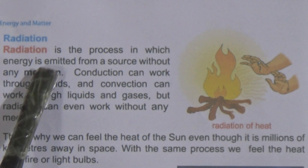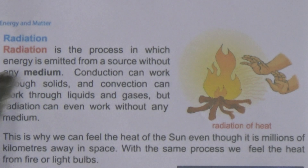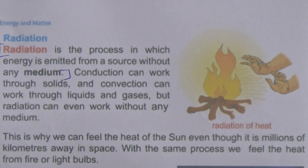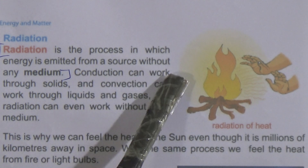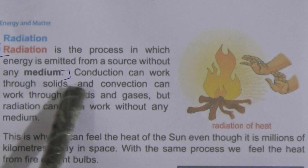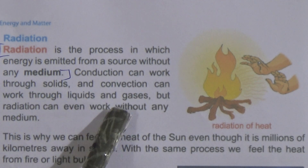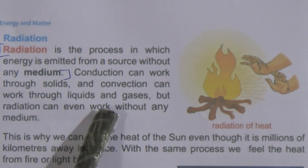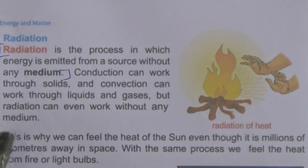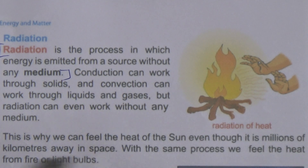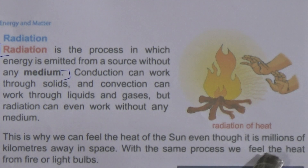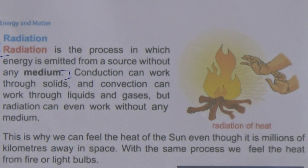Now come to radiation. Radiation is the process in which energy is emitted from a source without any medium. Conduction works through solids, and convection works through liquids and gases, but radiation can work without any medium. This is why we can feel the heat of the sun even though it is millions of kilometers away in space. With the same process, we feel the heat from fire or light bulbs.